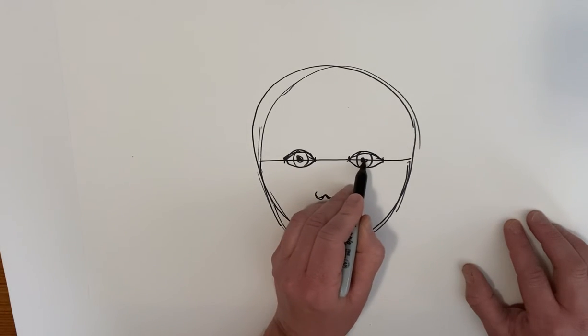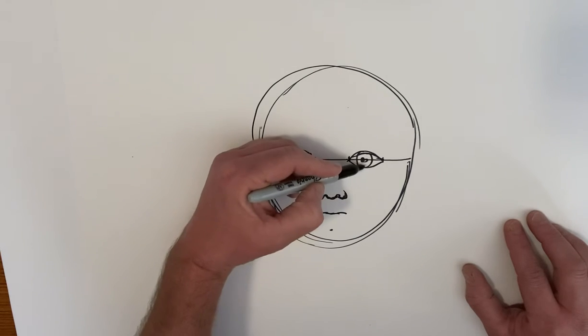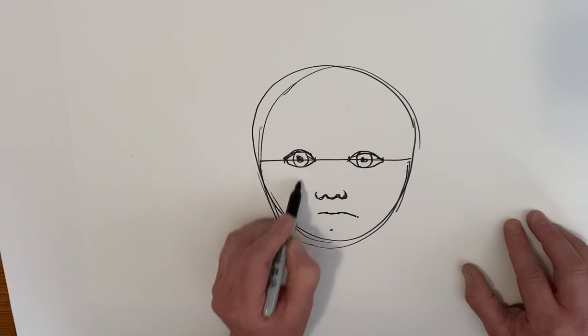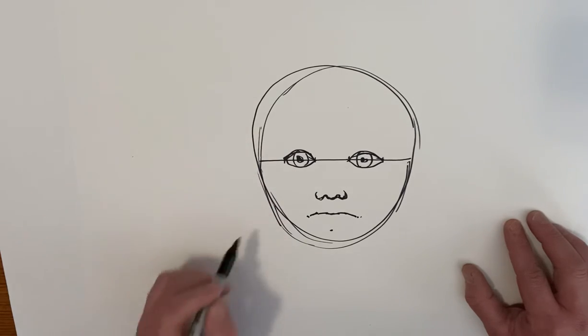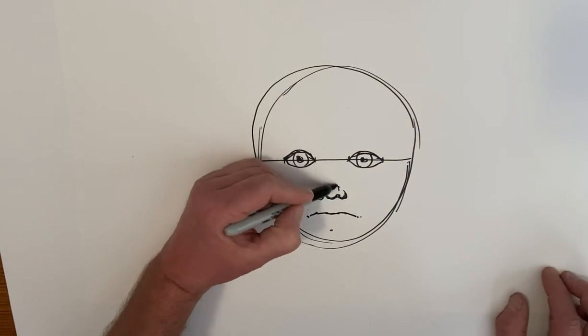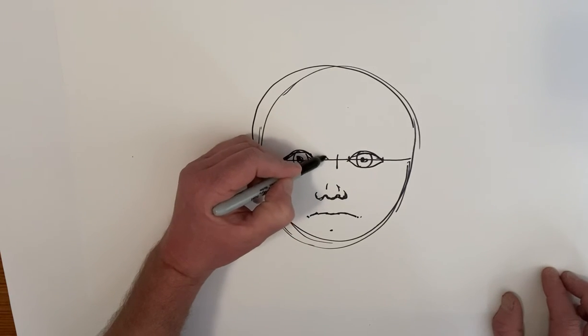And it should reach from pupil to pupil. So if you drew a line straight down from this pupil, it should be about that big. And if you drew a line from that pupil, it should be about that big. Sometimes it's just like the dimple that goes that big, but that's about how wide the mouth reaches.